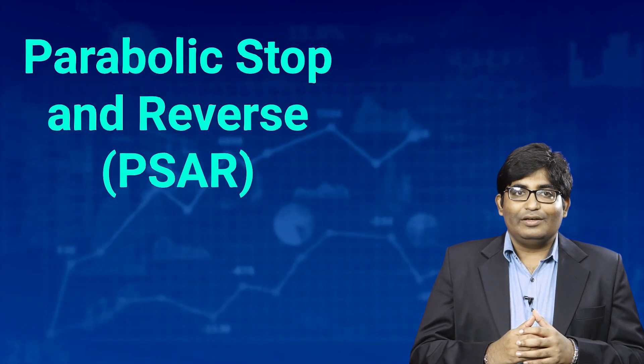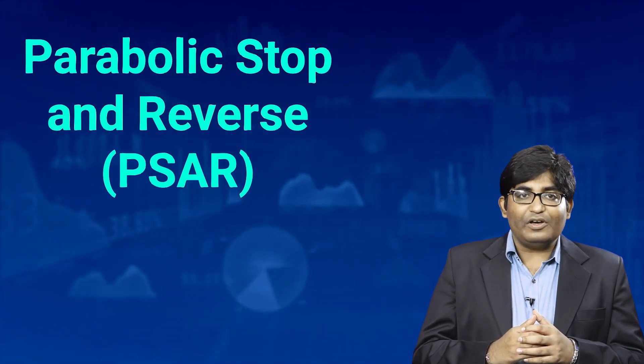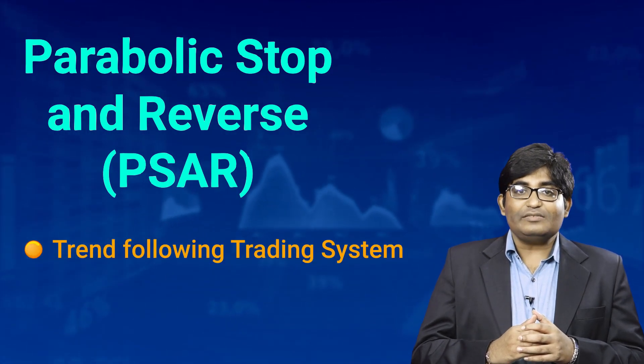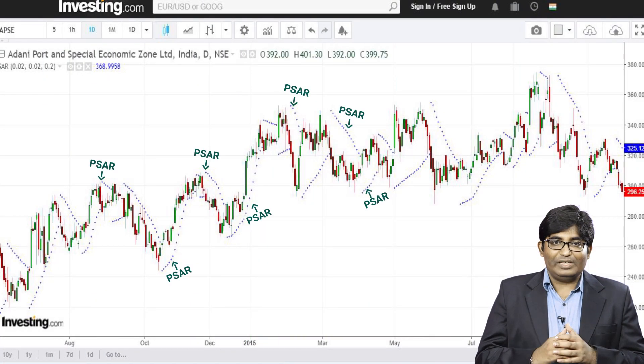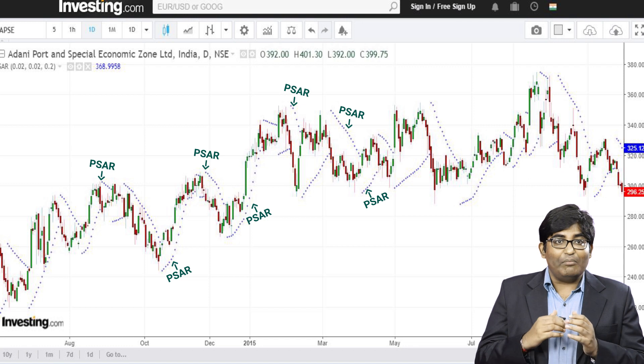Hello everyone. Parabolic SAR, or the Stop and Reverse, is a trend following trading system based on price and time based analysis. It was developed as a trading system by Wells Wilder. What we mean by trend following is that the indicator works very well and follows the trend of the market.